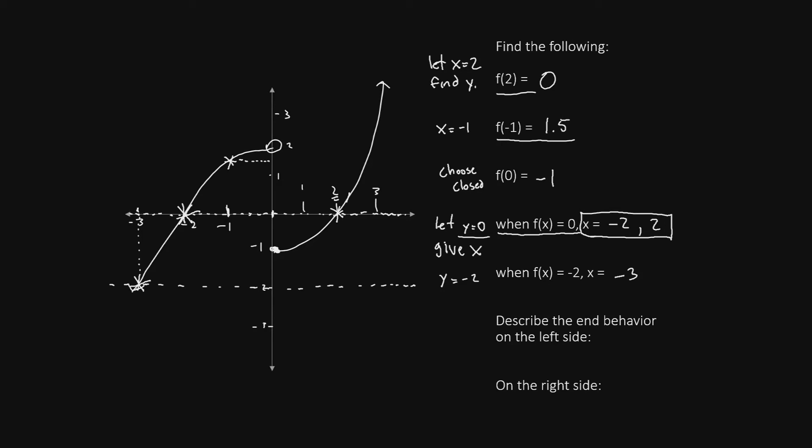Now to describe the end behavior, let's look at what's happening to the graph on the left side. So on the left side, we have our graph continuing to go down as represented by this down left arrow. This graph is going to continue to go down to the left and it will continue downward off to negative infinity.